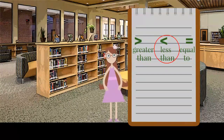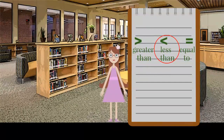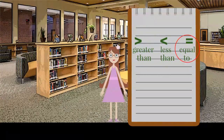Less than means the number on the left is less or smaller than the number on the right. Equal to means that both numbers are the same.